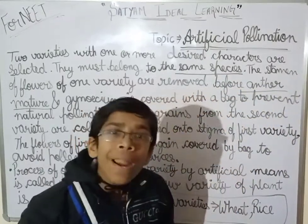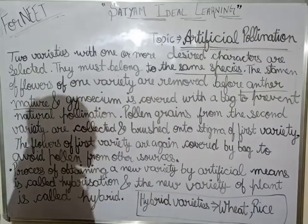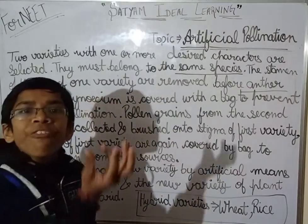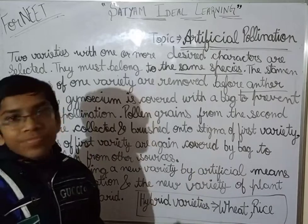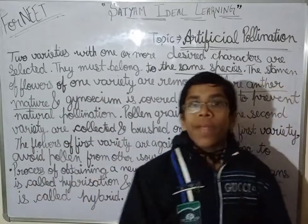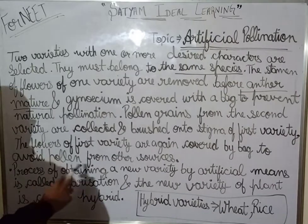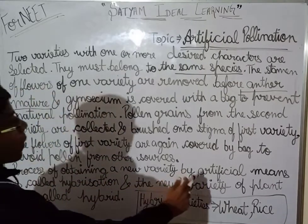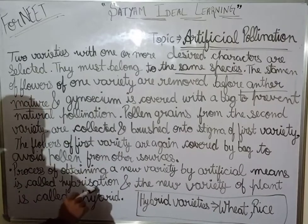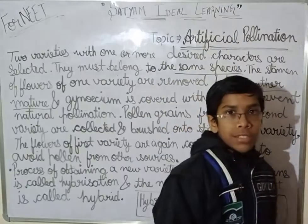After covering, natural reproduction will occur in the first variety and a new variety has been formed. The process of obtaining a new variety by artificial means is called hybridization.